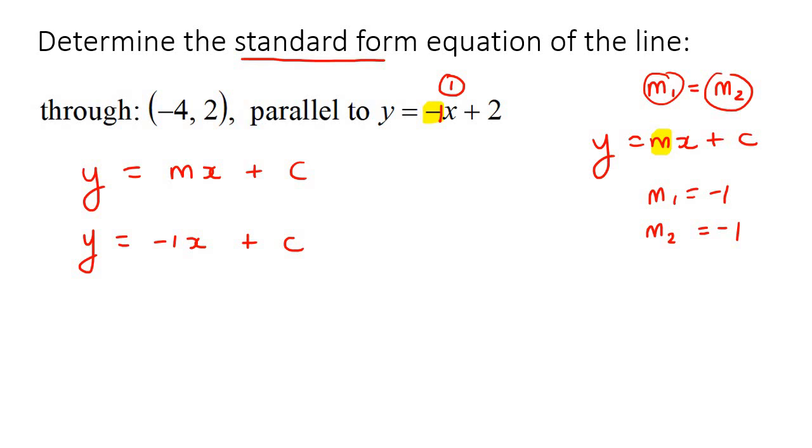So we already know the slope is negative 1. So we can fill that in. Then to find c or b, if your teacher uses a b, that's also fine, then what we'll do is we'll use this point over here. So we know that this is an x value, so we can plug that over there. And this is a y value, so we'll plug it over there.